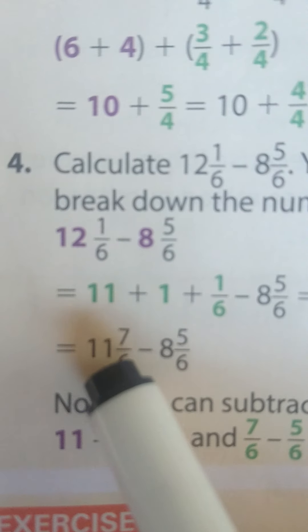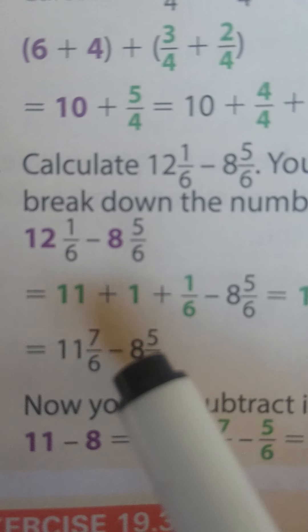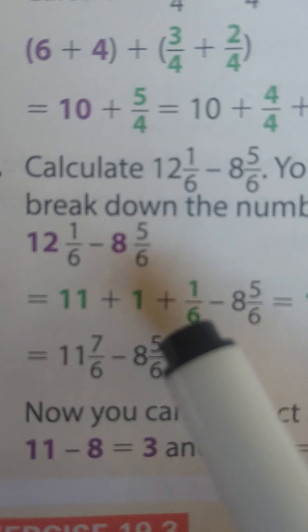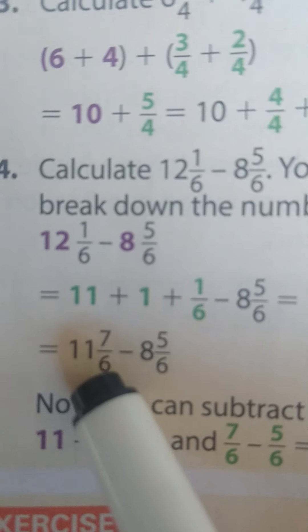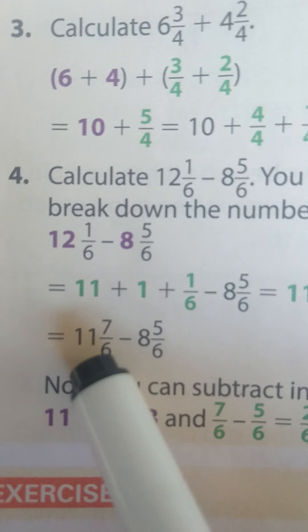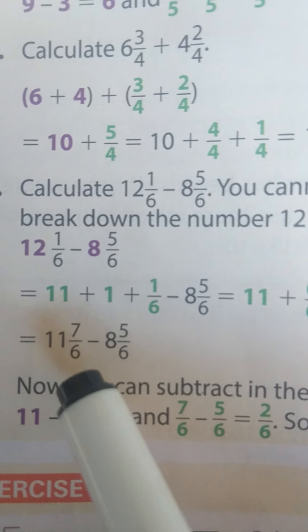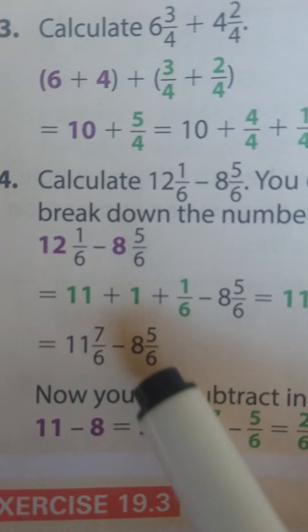Now tell me, can we subtract ⅚ from ⁷⁄₆? Yes. Because the 7 is bigger than 5. So our whole number is actually going to be 11⁷⁄₆ - 8⅚.